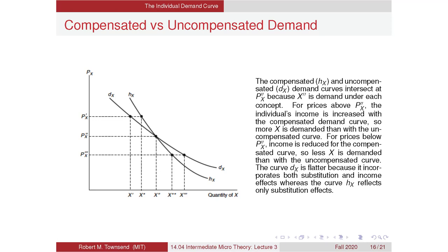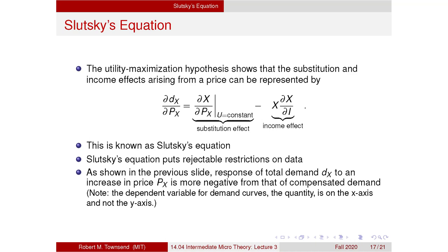So the answer to the puzzle is the demand curve figures have reversed the dependent and independent variables. We usually write dy/dx where y is the dependent variable and x is the independent variable. But the demand curve puts price on the y-axis. So it's the inverse slope — the slope dy/dx as written in that Slutsky equation is the inverse of the slope in the diagram.